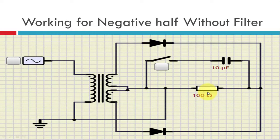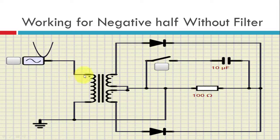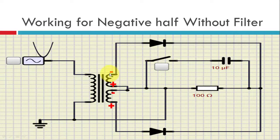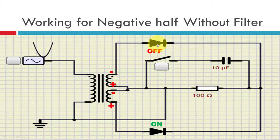Now let us see what happens in the negative half. During the negative half, when this input is applied across the primary of the transformer, two different voltages are produced at the secondary — minus, plus, minus, plus. Now because of this, in this negative cycle, the upper diode is in the off state and comes into reverse bias. But the lower one now conducts and is in the on state.